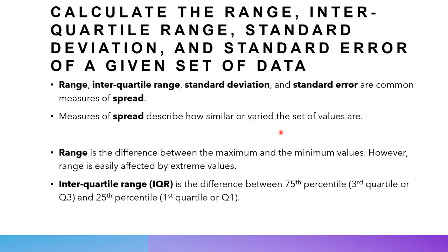Range itself is just the maximum value minus the minimum value — the highest scoring student versus the lowest scoring student. This is not a very fantastic measure because range can be affected by extreme values. For example, if out of the entire class all students except one scored between 70 to 80 and one student scored 95, the range will be stretched out by that one higher-scoring student. So range is not a very good measure of spread when extreme values are present.